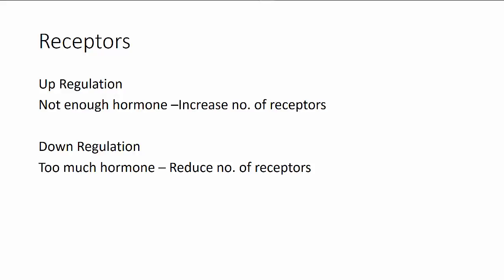So for example, if you don't have enough hormone, the body can increase the number of receptors. That's called upregulation. If you have too much hormone, the body can reduce the number of receptors and that's called downregulation.